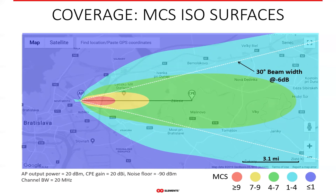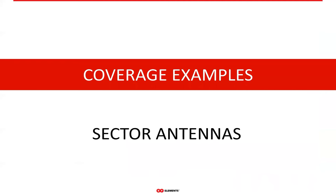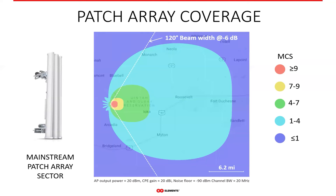It is important to understand that all antennas function in a similar way. The coverage is basically an elliptically shaped area, of course differing depending on the shape of the radiation pattern. We prepared a few examples of commonly used antennas in the WISP industry to illustrate how coverage looks based on real physics-based data and simulation. Let's start with the sector antennas.